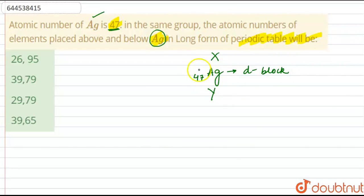And the element above this silver that is X, it is basically equals to 47 minus 18. That means, it is equals to 29 and 29 is the atomic number of copper. So the element above silver in periodic table is copper.